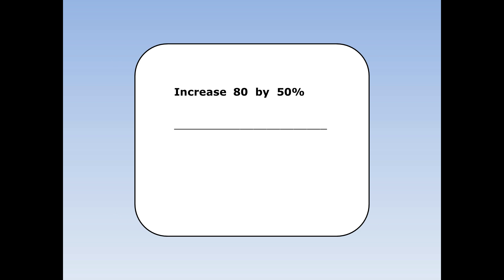Increase 80 by 50%. First of all I'm going to find the increase of 50% and then I'm going to add it on to the original. 50% is the same as a half. To find the half I divide by 2. 80 divided by 2 is 40. So this is the increase. And then I add this on to the original number which is 80. 80 plus 40 is 120.